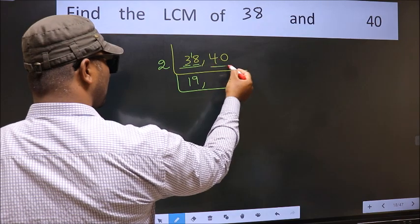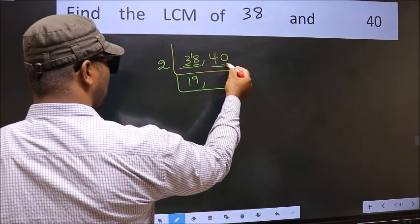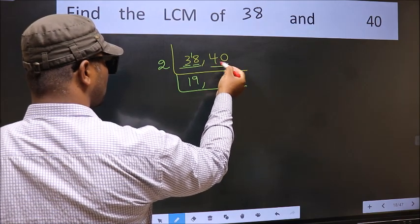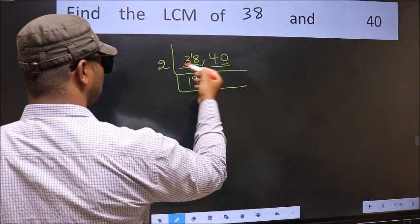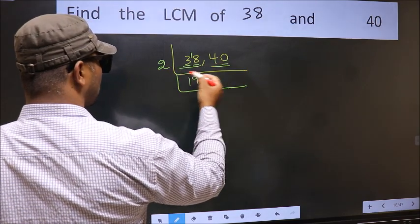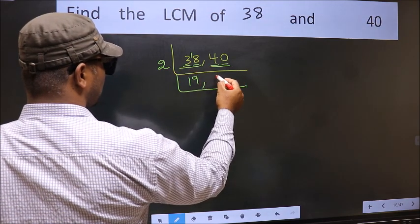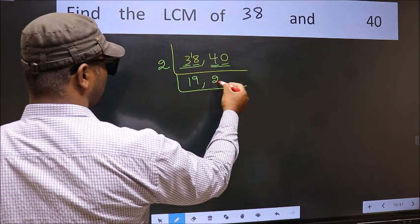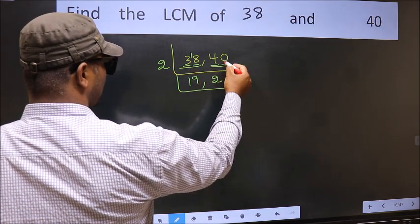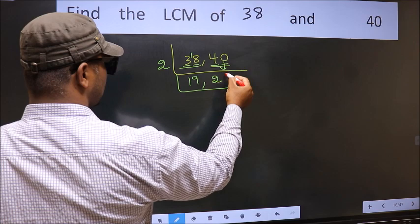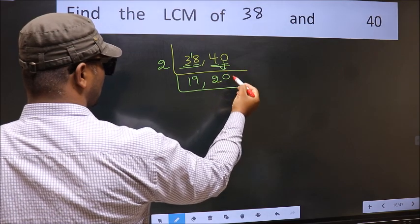The other number is 40. Last digit is 0, so this is divisible by 2. The first digit is 4; when do we get 4 in the 2 table? 2 twos are 4. Bring the 0 down. So 40 divided by 2 gives 20.